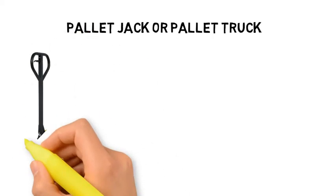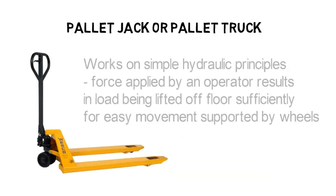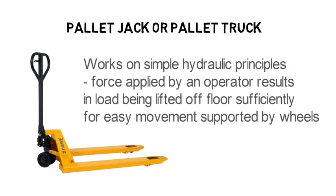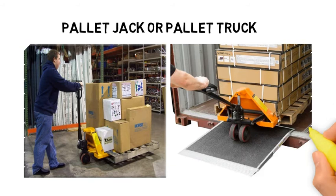One of the most commonly found manual MHE is the pallet jack, otherwise known as the pallet truck. It works on simple hydraulic principles — force applied results in the load being lifted off the floor, sufficiently for easy movement supported by wheels. A pallet jack can be used to lift and move pallets within a warehouse, or to load and unload pallets from a shipping container.